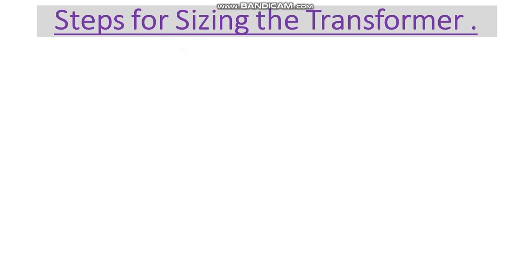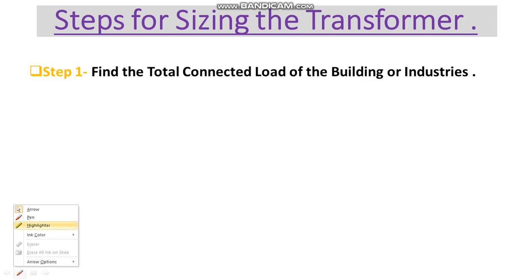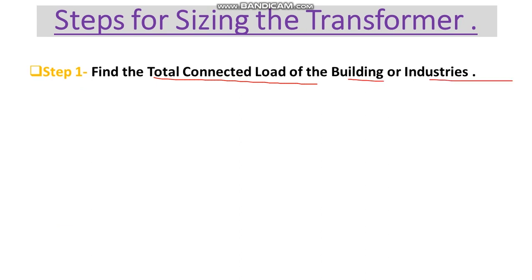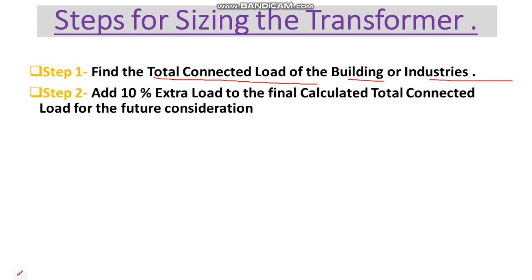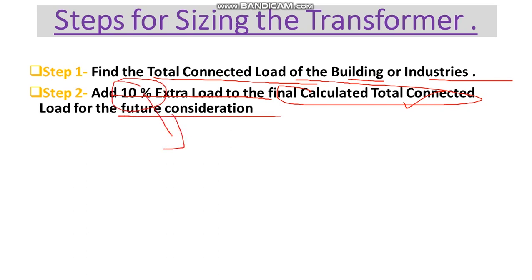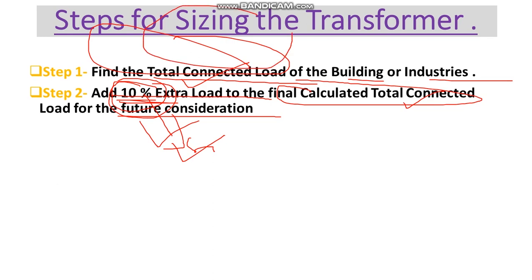Here we have some steps for sizing the transformer. In Step 1 we have to calculate the total connected load of the building or industry. In Step 2 we have to add 10% load to the final calculated total connected load for future considerations. This 10% is a safety factor, as we might increase our load in the future.